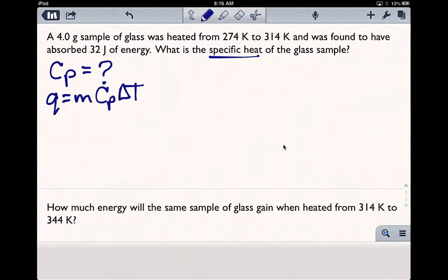Let's go ahead and label the things we know from the question. We are given the mass, that is 4 grams. We're given our delta T. You can calculate subtracting 274 from 314, which comes out to be a 40 degree temperature change. And what else do we know? We know Q is 32 joules.